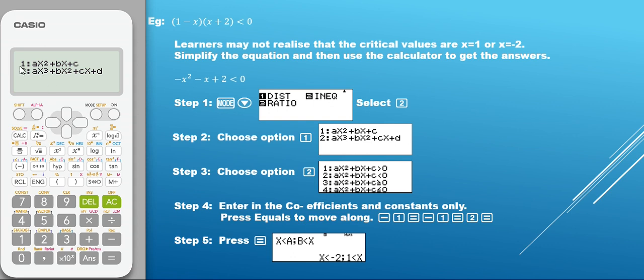Now you will see that we have got two different options. Option 1 is our quadratic inequalities, and option number 2 is our cubic inequalities. For today's question or example, we are looking at squared, so therefore we are going to deal with option 1, quadratic inequalities. Select option 1.